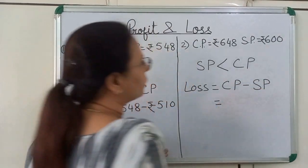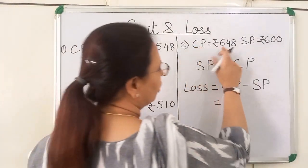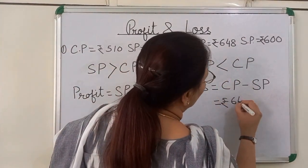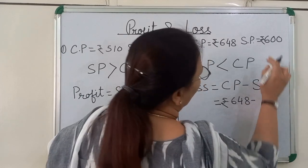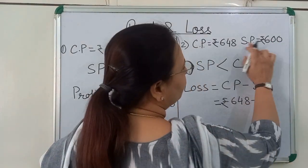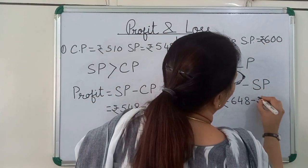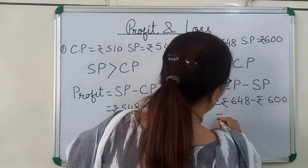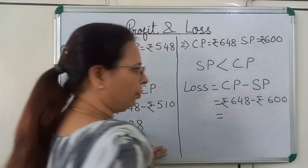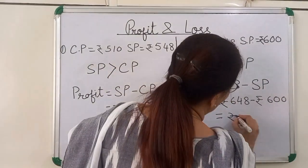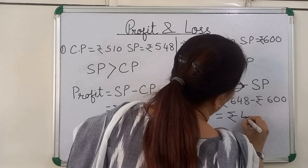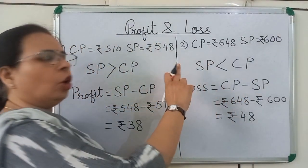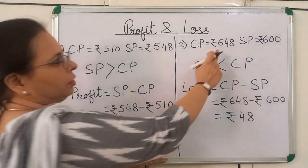Cost price is Rs. 648 minus selling price SP, which is Rs. 600. When we subtract, we will get Rs. 48. Rs. 48 is the loss in this case.